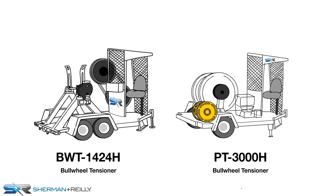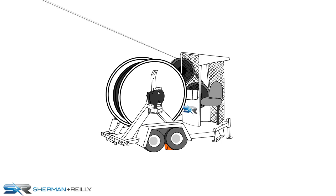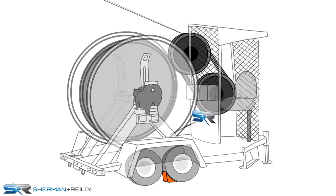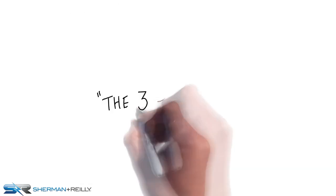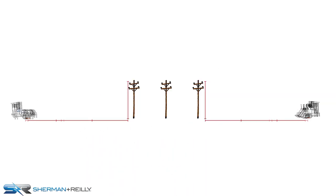In this illustration, we'll use a BWT 1424 bullwheel tensioner. The conductor is installed onto the unit, and the bullwheels provide precise and controlled tension. Keep the three-to-one rule in mind when positioning the equipment. Place the unit at a distance of three times the height of the lead block.